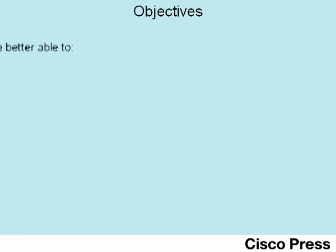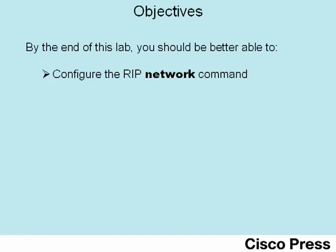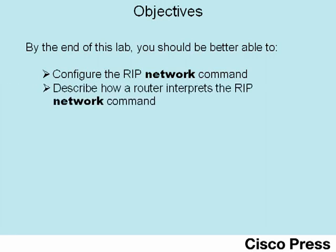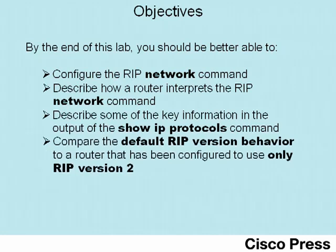This lab has four main objectives. First, this lab will examine how to configure the RIP network command so that by the end of the lab you'll be able to describe how a router interprets the network command and what it does on each interface that matches it. We'll also focus on the show IP protocols command and compare default RIP behavior regarding versions versus a router configured to use just RIP version 2.